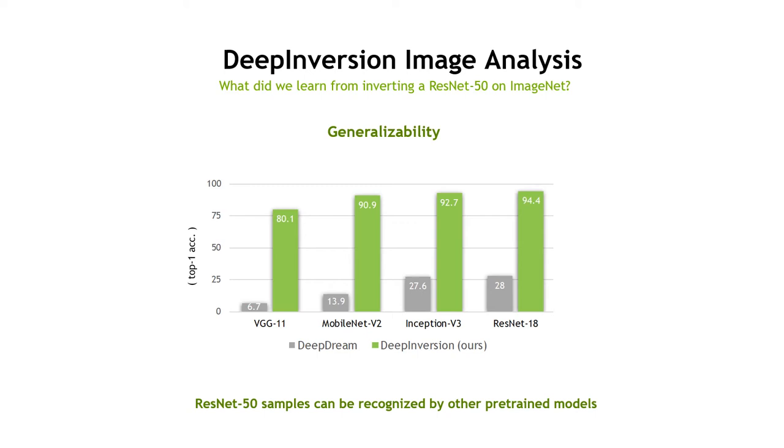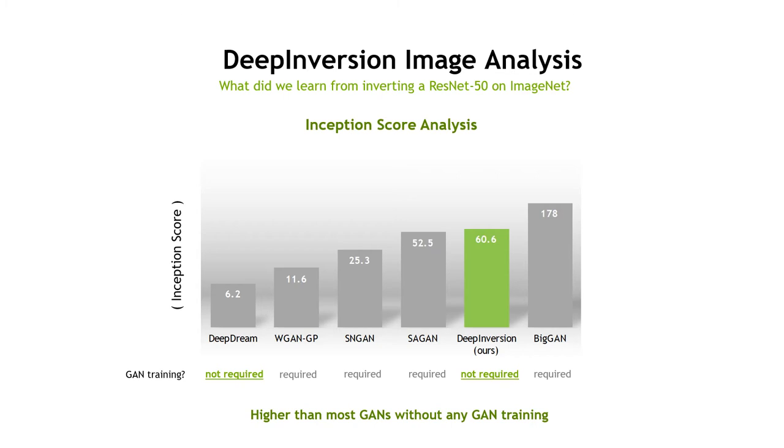In terms of inception score for image quality assessment, our method beats most of the GAN baselines before BigGAN while completely alleviating the need for any additional GAN training.